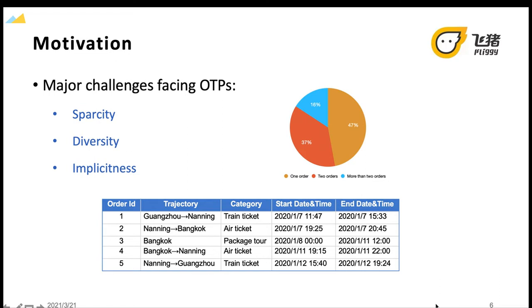For example, this table displays a user's orders created by Fliggy for travel. By considering those orders as a whole, we can accurately infer the user's travel intention of the third order is for sightseeing, while the intention of the remaining orders is for transfer.